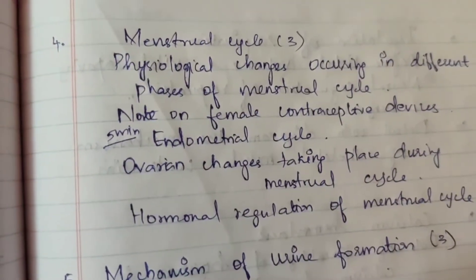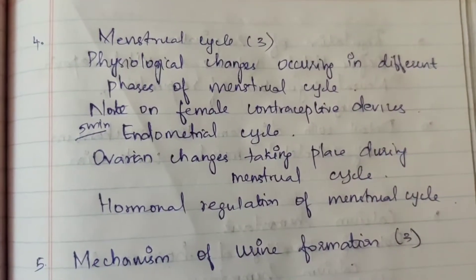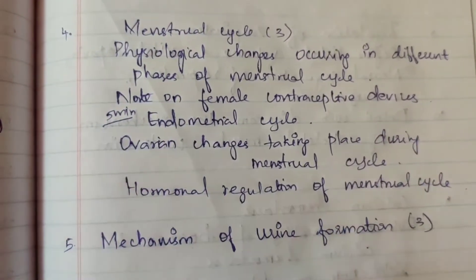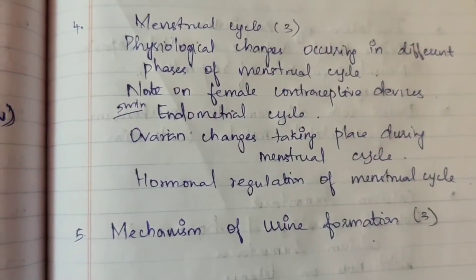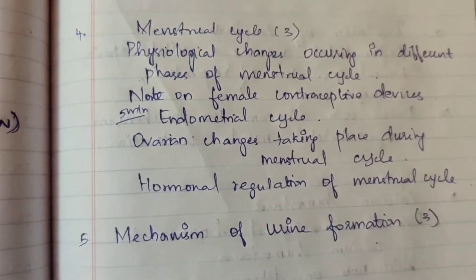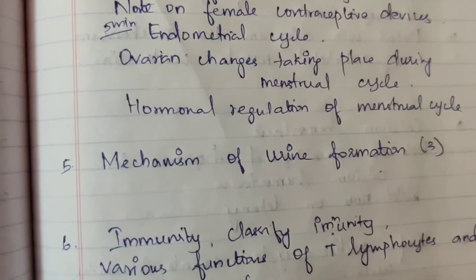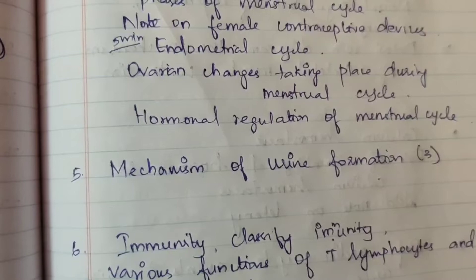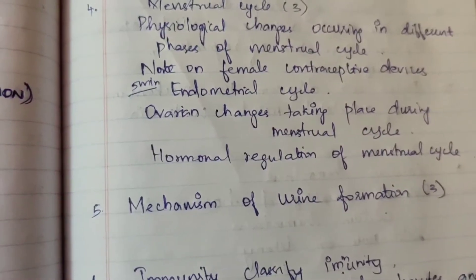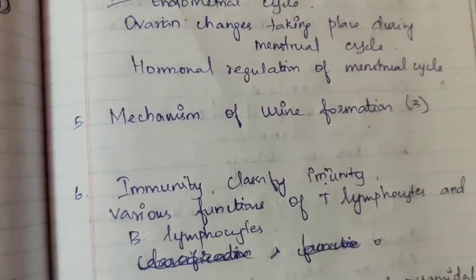Fourth question: menstrual cycle appears three times. Physiological changes occurring in different phases of the menstrual cycle is one of them. Note on female contraceptive devices is mentioned in 5 marks. Endometrial cycle is one question. Ovarian changes taking place during the menstrual cycle — that is phases of the menstrual cycle — appears as a 5-mark question. Hormonal regulation of menstrual cycle also appears in 5 marks.